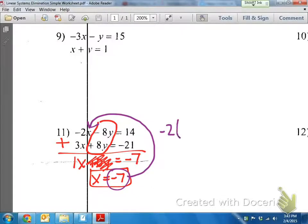So negative 2 times negative 7 minus 8 times... oh excuse me, times y equals 14. Negative 2 times negative 7 is positive 14. So 14 minus 8y equals 14.